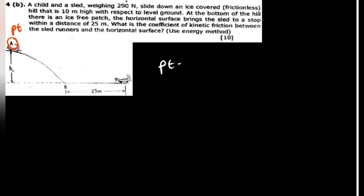Why only potential energy? We know potential energy is given by mgh, and kinetic energy is given by half mv squared. Since we have no velocity at part A, we have no kinetic energy there. As the sled comes down, that potential energy is converted into kinetic energy. So immediately when we reach part B, all the potential energy from part A has been converted into kinetic energy at part B.